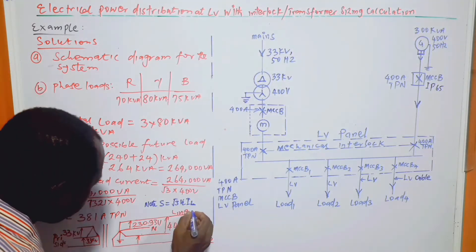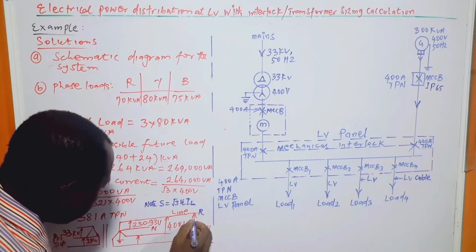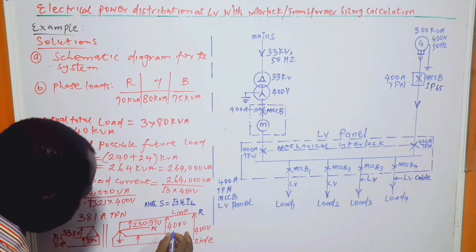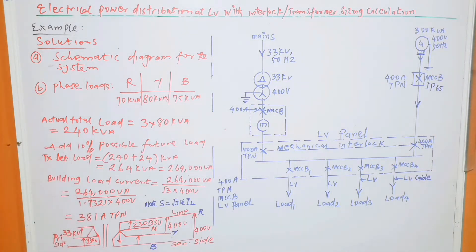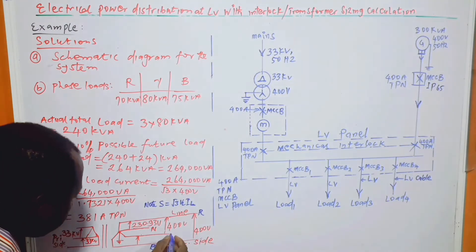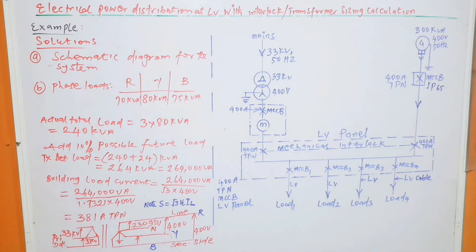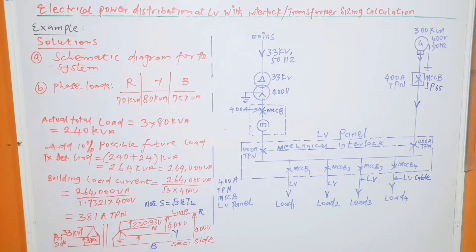So this is 381, the current flowing in this phase also is 381, and also in this phase 381. So actually, we can call this one the red phase, and this one will be yellow phase, and this will be blue phase. So this is the secondary side, and this is the primary side with 33 kV line to line, and that is the answer to part B of the question.